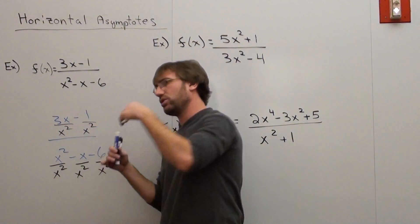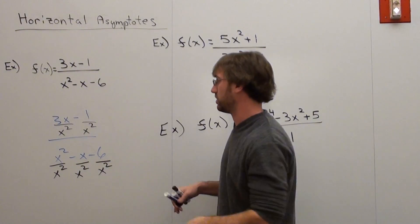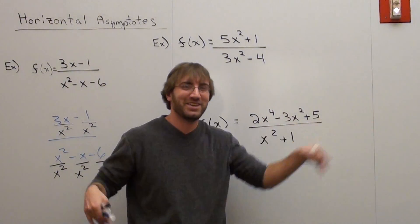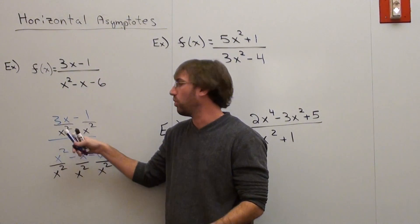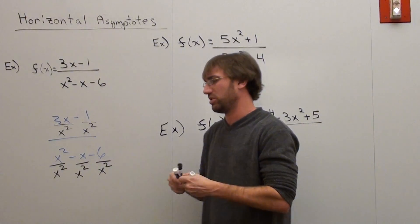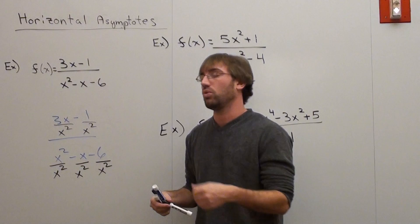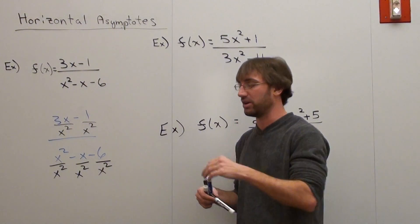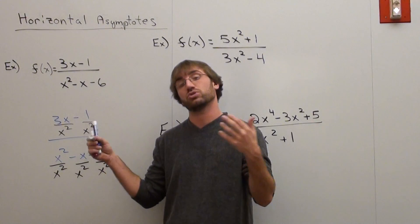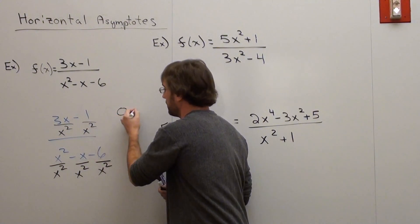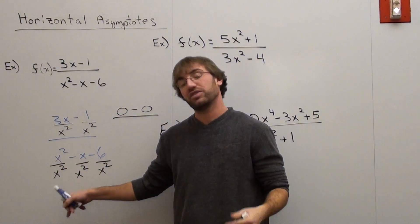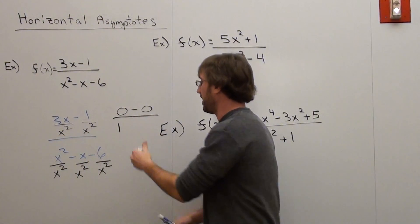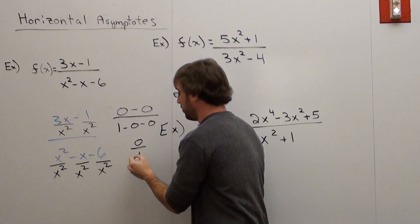What happens is if you assume that x is getting larger and larger, because that's what a horizontal asymptote does — it goes toward infinity or negative infinity. As x gets bigger and bigger, this number gets smaller and smaller. For example: 1 divided by 1 is 1, 1 divided by 2 is 0.5, 1 divided by 10 is 0.10, 1 divided by 100 is 0.01. As your denominator gets bigger, your value gets smaller. So this becomes 0 minus 0 over x squared divided by x squared equals 1 — and x over x squared goes to 0. That value is 0 minus 0, so you've got 0 over 1, which equals 0.